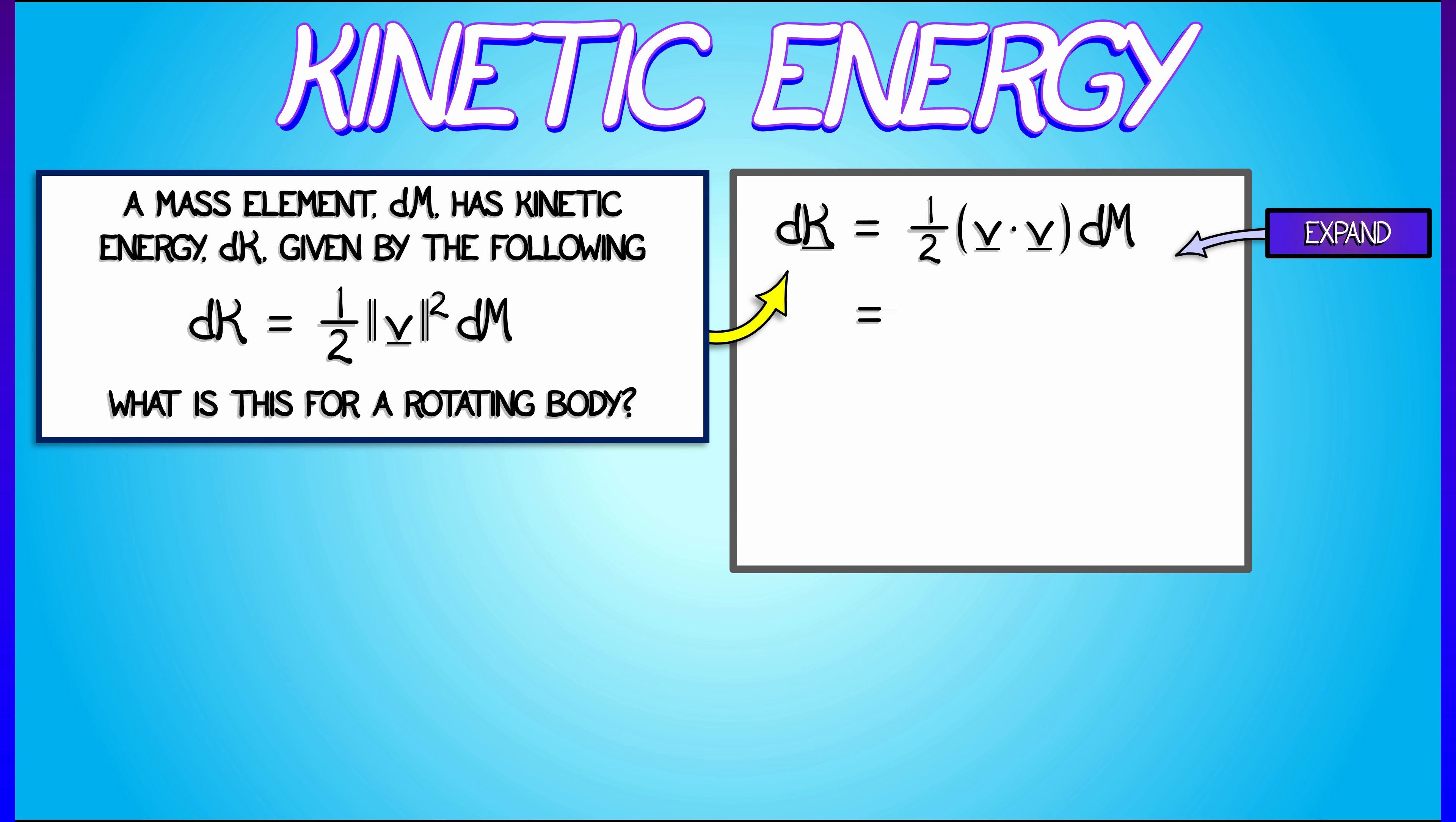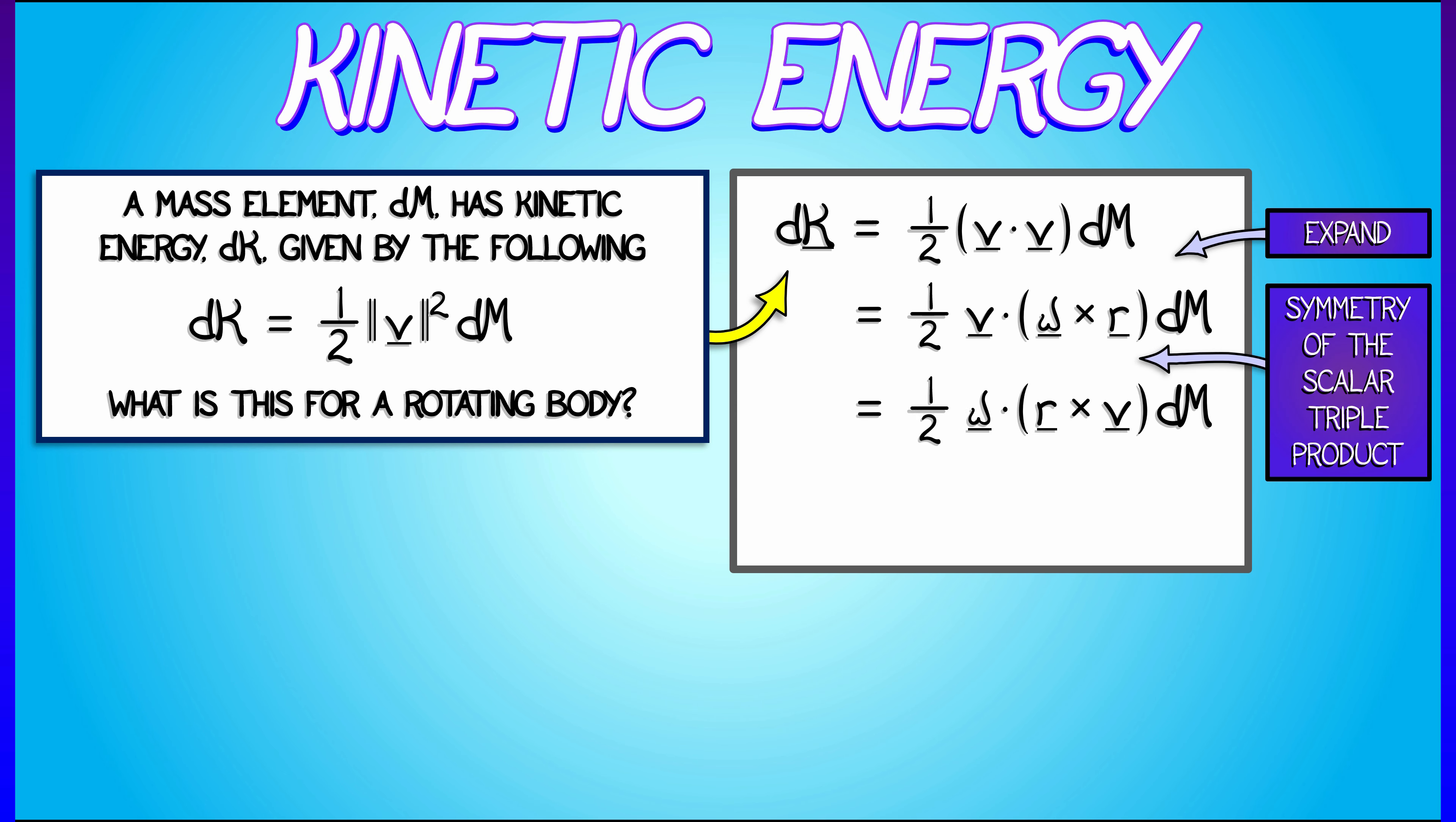And now I see a scalar triple product in there: v dot omega cross r. I remember that the scalar triple product is symmetric, so I can change the order and say that dk is one half omega dot r cross v dm. And voila, r cross v dm is really dl, the angular momentum element.